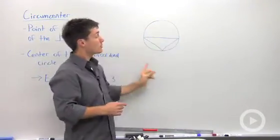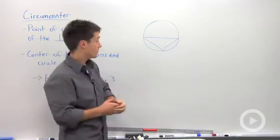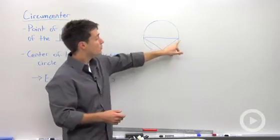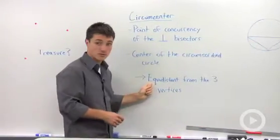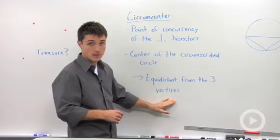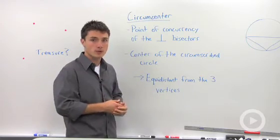We notice that it could be a really big circle if you have an obtuse triangle, and that it passes through all three vertices, which means that the center is equidistant from the three vertices. But when will we ever apply this in real life?